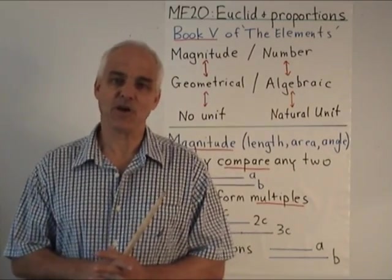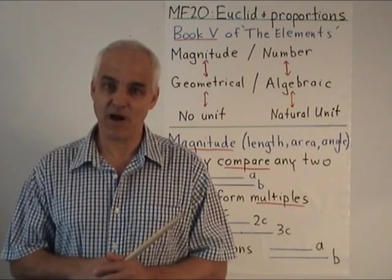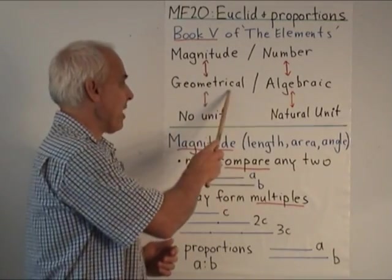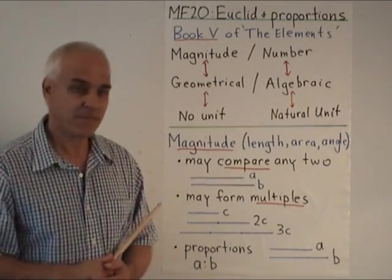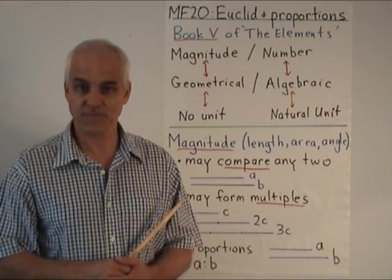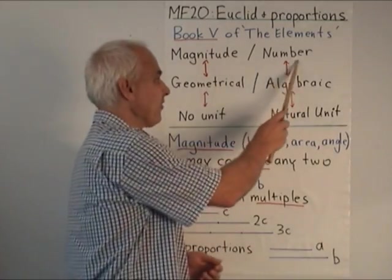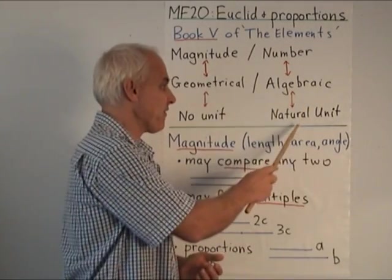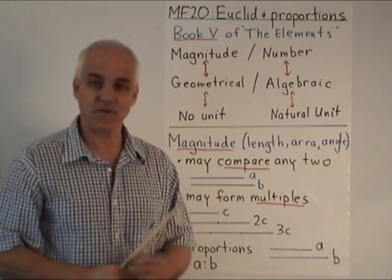The ancient Greeks thought about magnitude as being the fundamental object of interest, and the magnitude was basically a geometrical object, characterized by the fact that there was no natural unit. We moderns tend to think as number is fundamental, essentially in an algebraic framework where there's a natural unit of the number one.